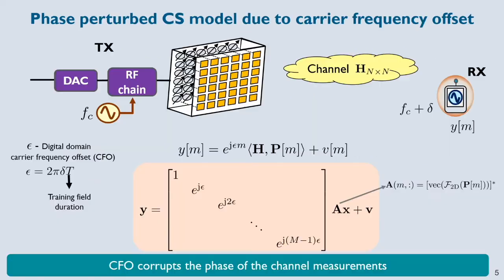In this presentation, I am going to take one step towards practice by considering a hardware impairment called CFO. Carrier frequency offset basically perturbs the phase of the measurements, and the phase perturbations are shown here. So when compared to the usual linear compressed sensing model Y = AX + V, we now have a phase-perturbed linear model: Y = diag(epsilon) * AX + V. In this system, A is under the transmitter's control, while the beam space variable X and epsilon are unknown. When epsilon is zero or known, we can pull this diagonal matrix to the left-hand side and recover a standard linear compressive sensing problem.